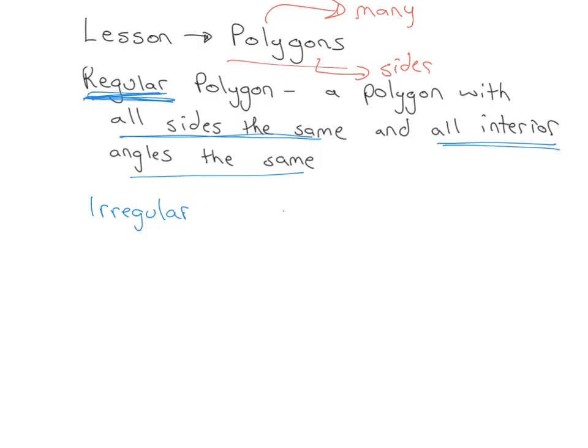The sides must be the same and all the interior angles are the same. So for example, something like a square is an example of a regular polygon. This side is the same as this side, is the same as this side, is the same as this side. Also, all the angles are 90s.